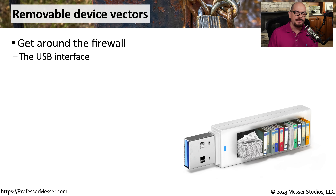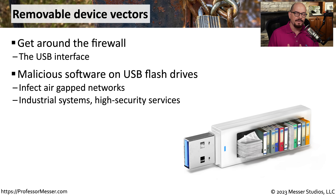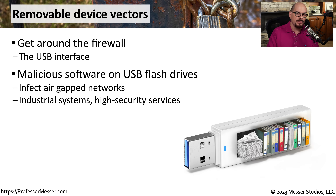I've worked with companies that have spent millions of dollars to install the latest firewalls, intrusion prevention systems, and network filtering products. But an attacker can circumvent those millions of dollars of security products with a single $10 USB drive. This can be especially useful if an attacker needs to get onto a network that is air-gapped, meaning there's no direct network connection into that internal network. Instead, the attacker will go into the parking lot of that company, throw a few USB drives on the ground, and hope that someone will pick one up, take it inside the building, plug it in — and on that USB drive there's malicious software that might disrupt operations or provide a way to exfiltrate data.